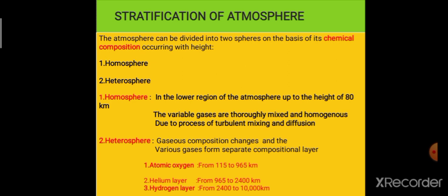Here, the composition of gases is homogeneous — it is similar. This is because here mixing takes place through the process of diffusion and turbulent mixing. This is the reason in the homosphere the composition of gases is similar, and it extends up to a height of 80 kilometers in the lower region of the atmosphere.